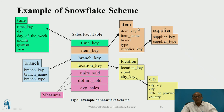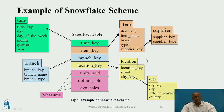In the snowflake schema, whatever fields are divided at the first level are again divided into a second level. For example, item key is divided into item key, item name, brand name, and supplier key — which is further divided into supplier key and supplier type. Similarly, time key is divided. Location is distributed, with city key considered and further divided into city key, city name, and country name.